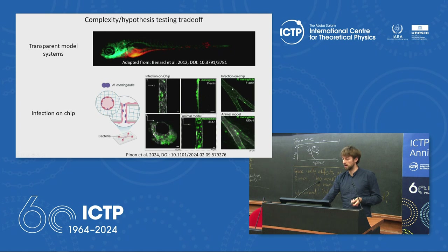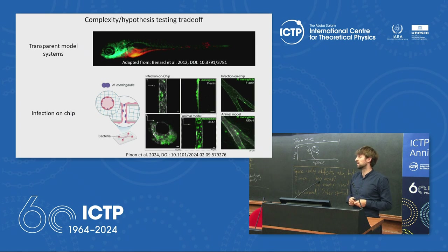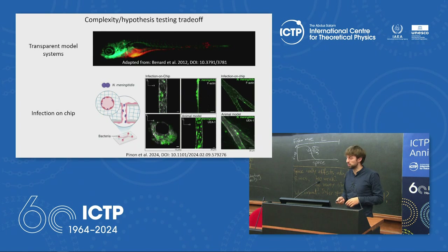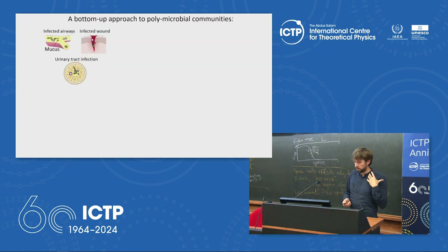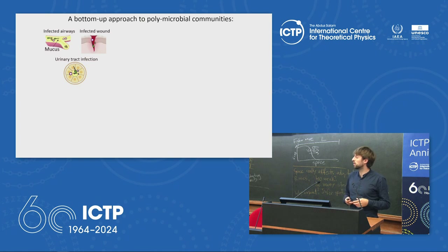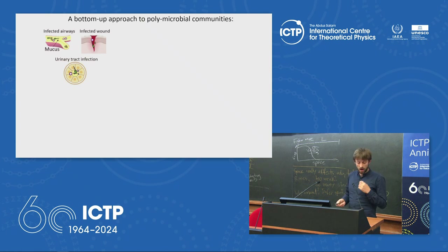This approach is probably the future, but it is still quite technically challenging, also because you need to keep happy the host and all members of the community at the same time. My approach to whittle down complexity while still looking at polymicrobial communities and testing hypotheses is to build polymicrobial communities from the bottom up and look at them in microfluidics. I use pathogenic polymicrobial communities relevant to infected airways, infected wounds, and with some changes, UTIs.